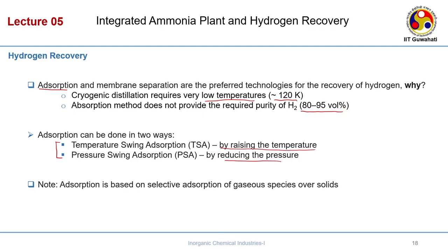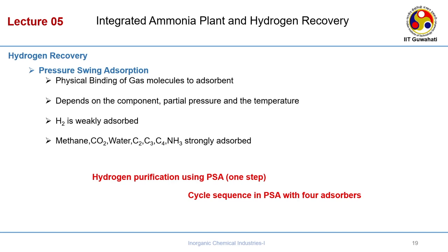Adsorption in PSA is based on selective adsorption of gaseous species over solids. PSA depends on physical binding — no chemical reaction — of gas molecules to the adsorbent. It depends upon the component, its partial pressure, temperature, and the nature of the component. Hydrogen is weakly adsorbed, while impurities such as methane, carbon dioxide, water, ethylene, propylene, butane, and ammonia are strongly adsorbed.